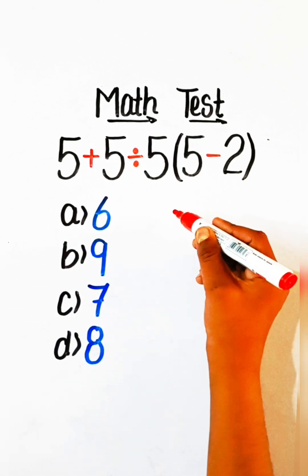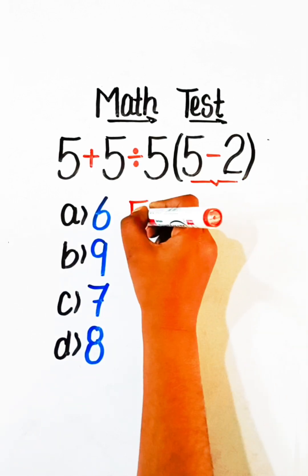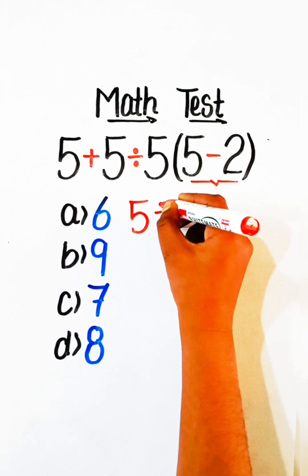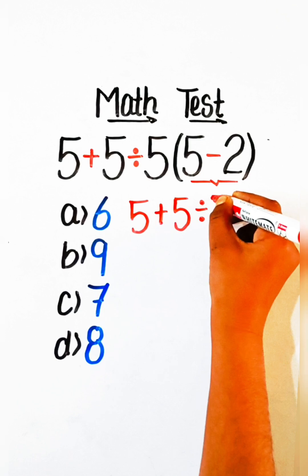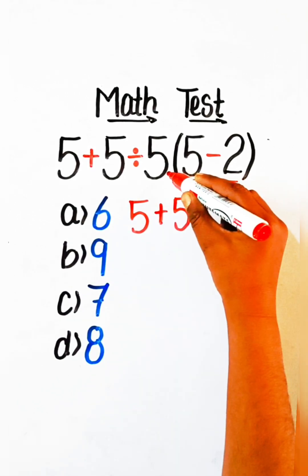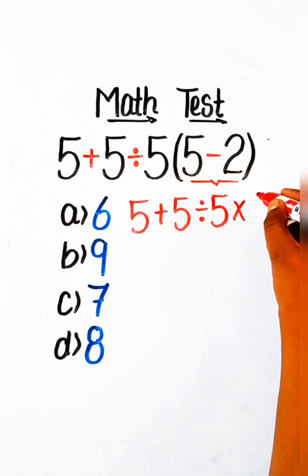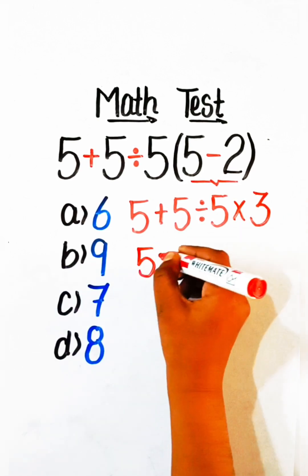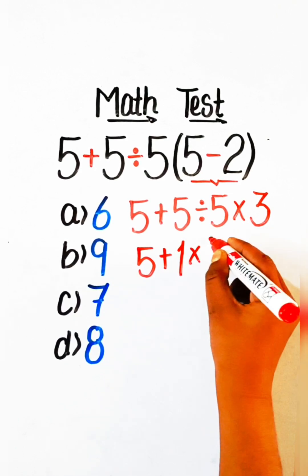So let's solve this. First we have to solve the bracket part: 5 minus 2 is 3. Write the rest as it is — 5 plus 5 divided by 5, multiply 3. 5 divided by 5 is 1, multiply 3 gives 3.